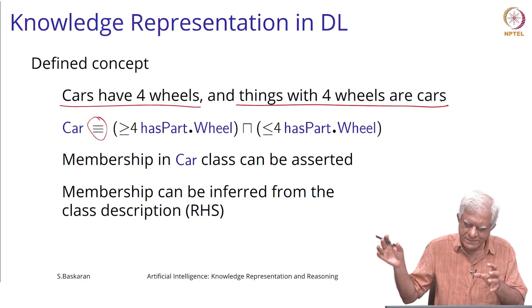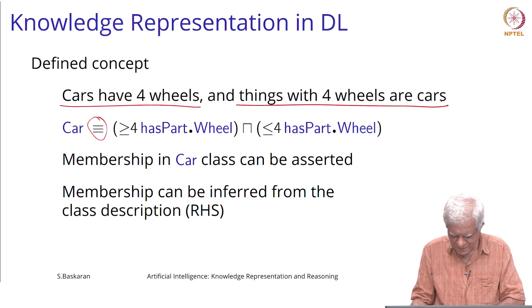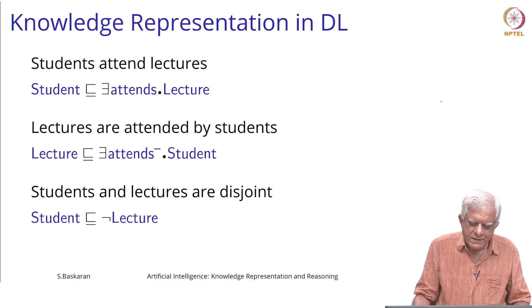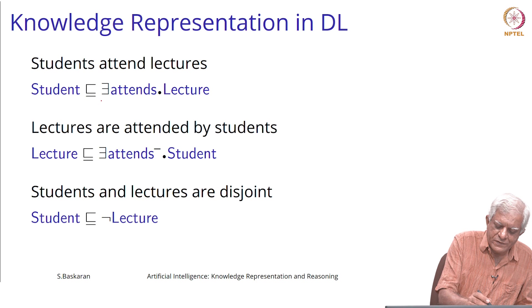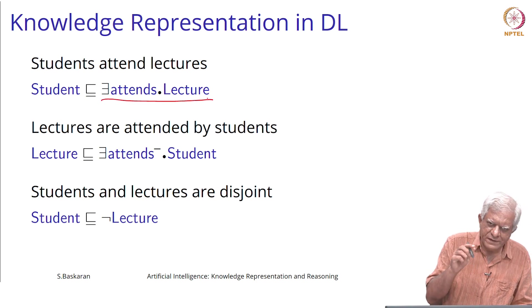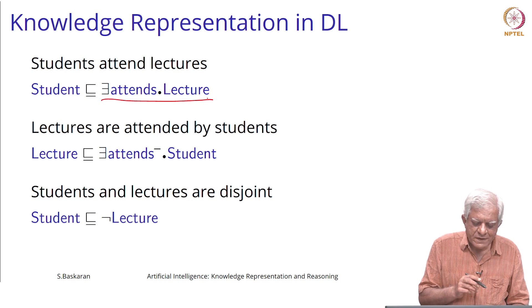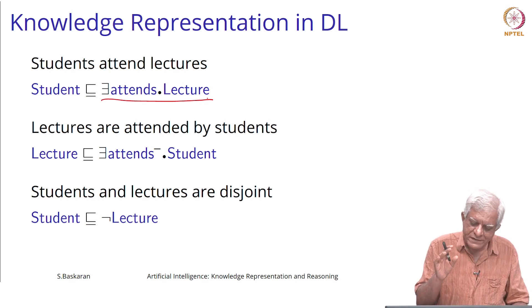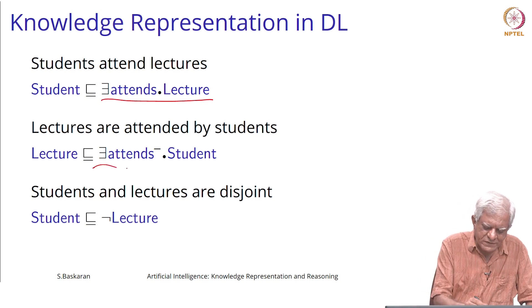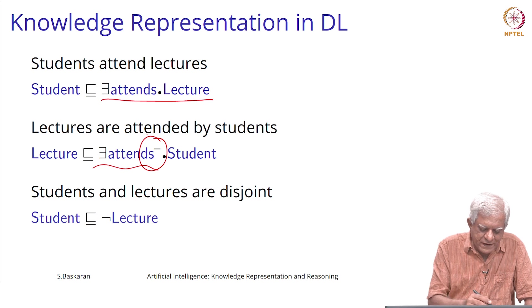You define a concept using other concepts and then you know where it sits in the taxonomy. If we want to say 'students attend lectures', the right-hand side says the set of individuals who attend at least one lecture; lectures are those things which are attended by students. That is the inverse of the 'attends' role essentially, and the fact that lectures and students are disjoint can also be stated using this relation.